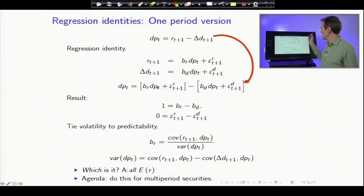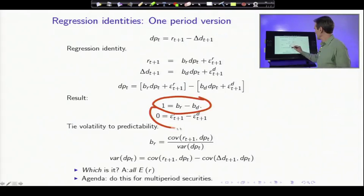Well, you can see the t terms and the t plus 1 terms have to be separately equal. So dp, b_R dp minus b_D dp, the regression coefficients have to add up. And similarly, the errors have to add up. So these two regression coefficients are not arbitrarily different things. They have to add up to 1.